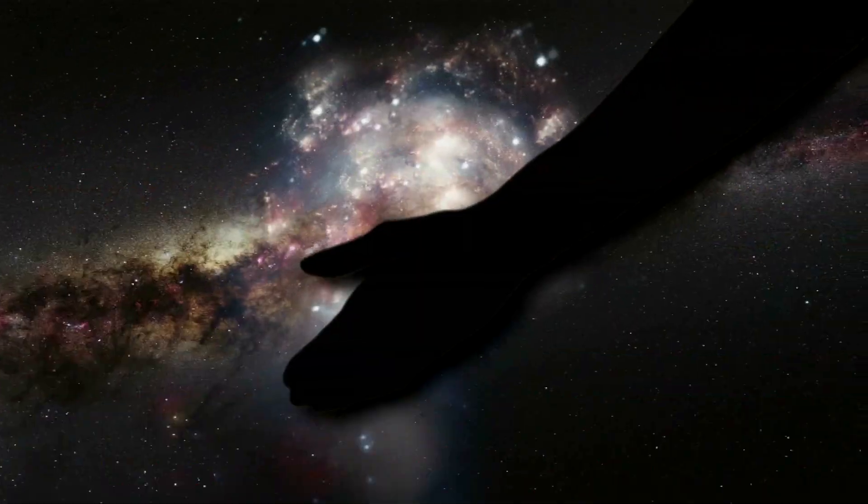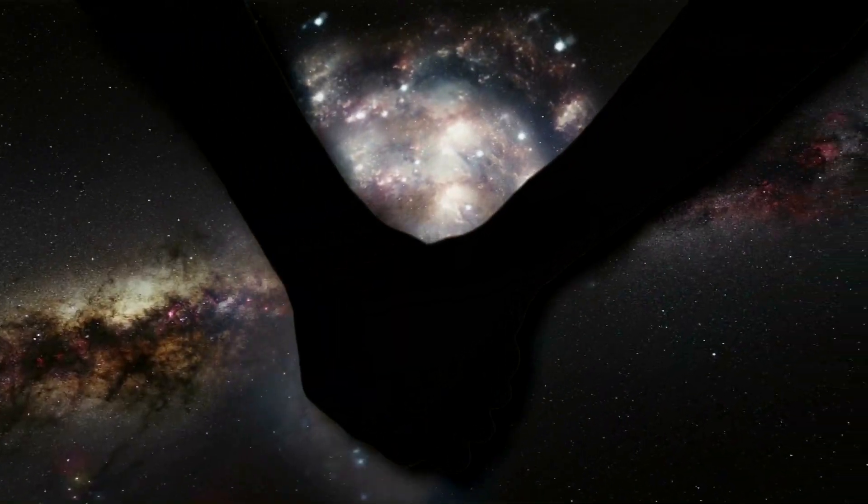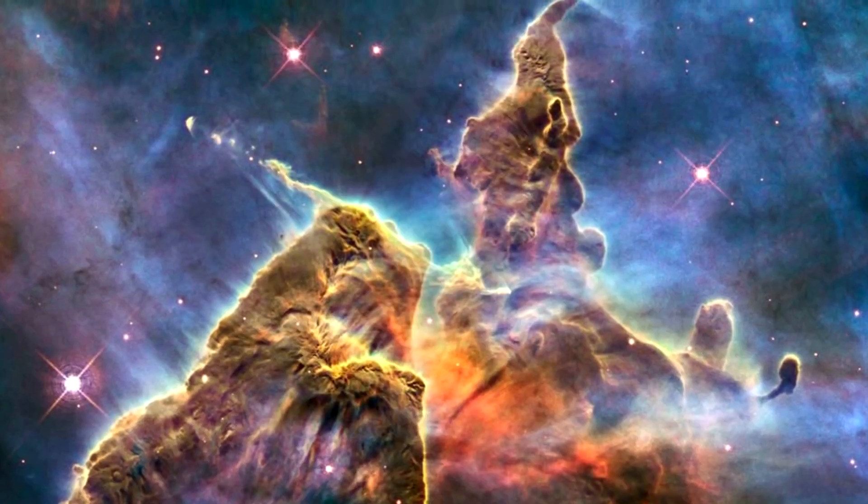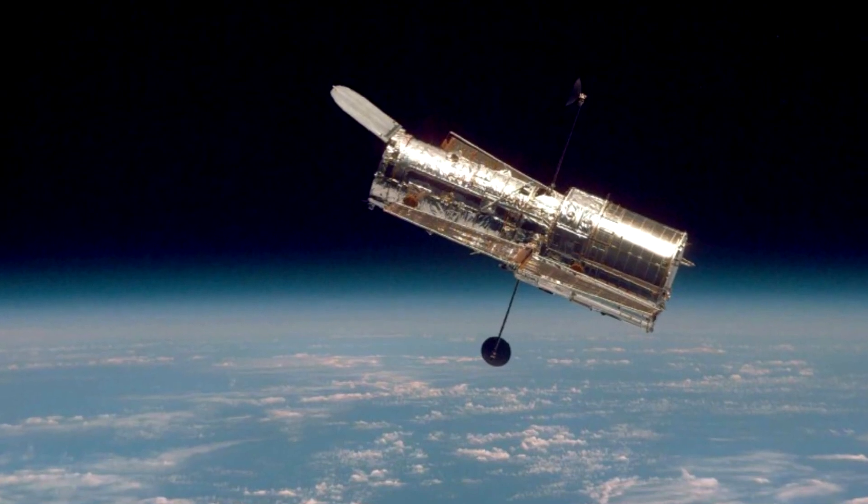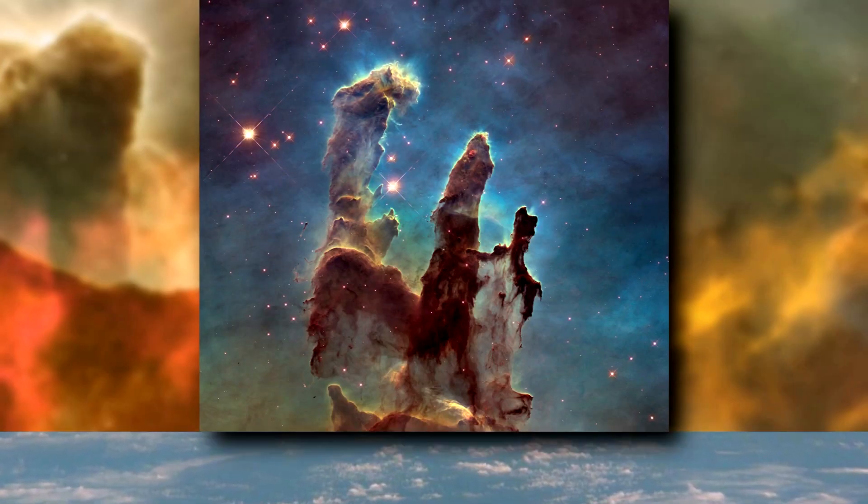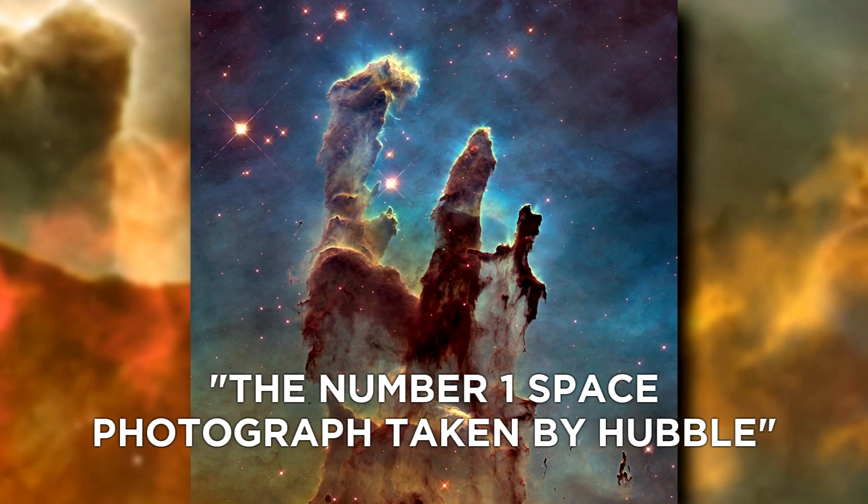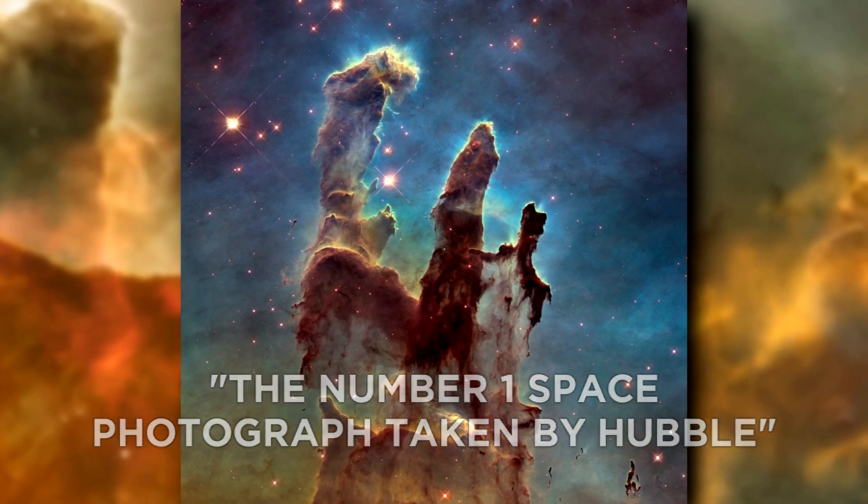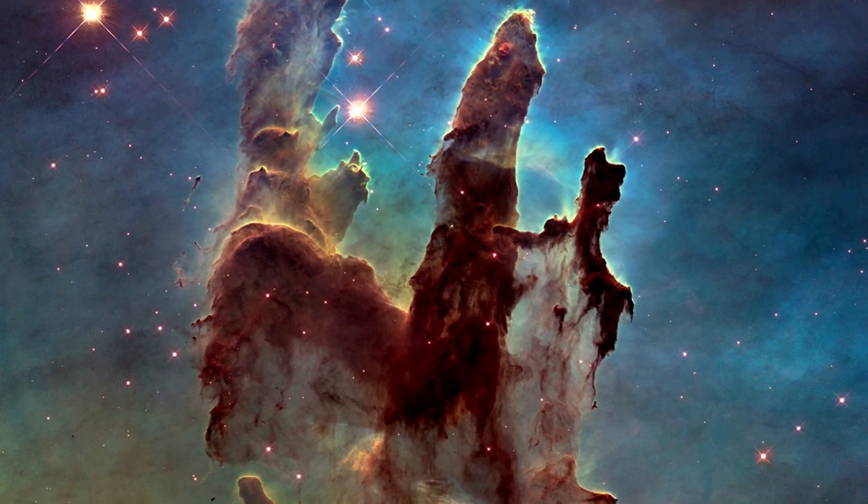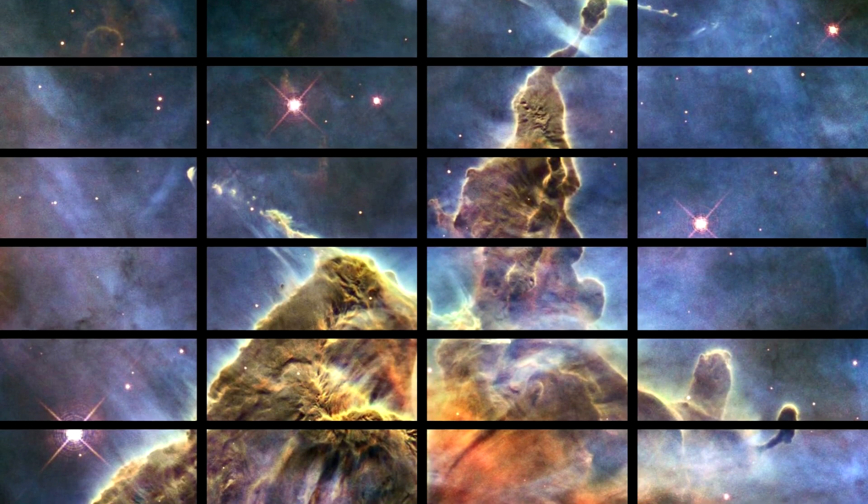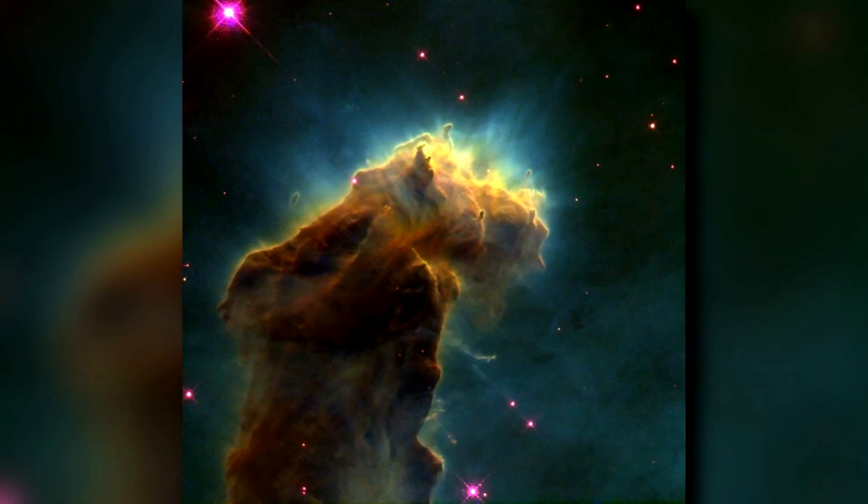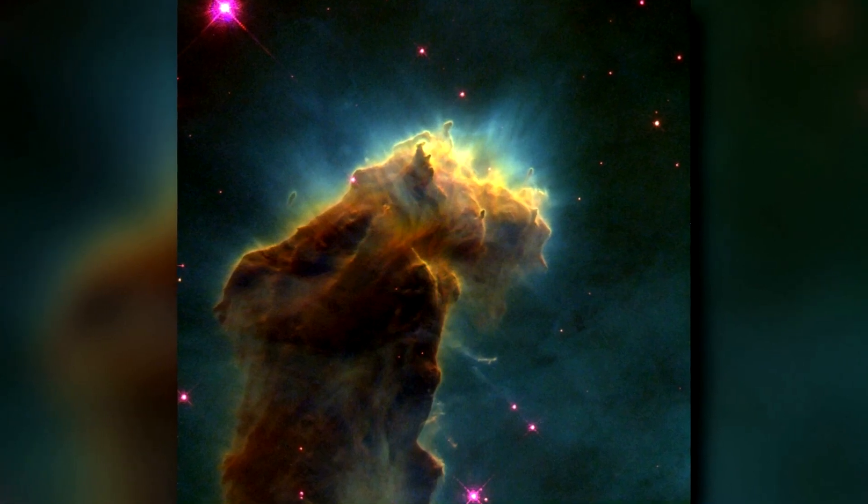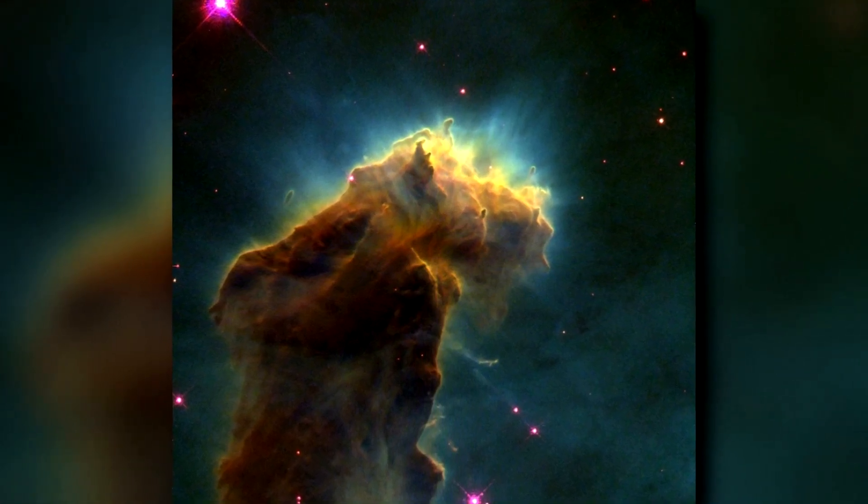And guess what? The universe has given us a hand to go with this eye. Elephant trunks of interstellar gas and dust near the Eagle Nebula were pictured by the Hubble telescope in 1995. The photo, which was named the number one space photograph taken by Hubble, shows us what looks like a huge hand reaching up into the cosmos. It's actually composed of 32 different images, which gives you an idea of the pillar's size. It's absolutely breathtaking that such beauty can exist at such gargantuan size.